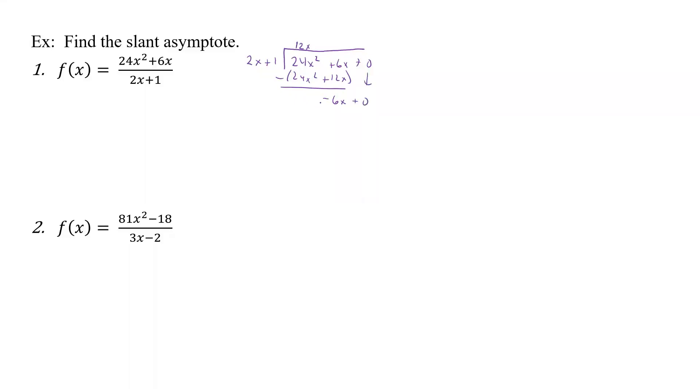So 2x times what gives us minus 6x? Well times minus 3, that's minus 6x and then minus 3. Again we subtract off the whole thing, that gives us 3, but all we care about is this. We don't want the remainder. And so our slant asymptote is equal to y equals 12x minus 3. Okay, and so that's how we find the slant asymptote.